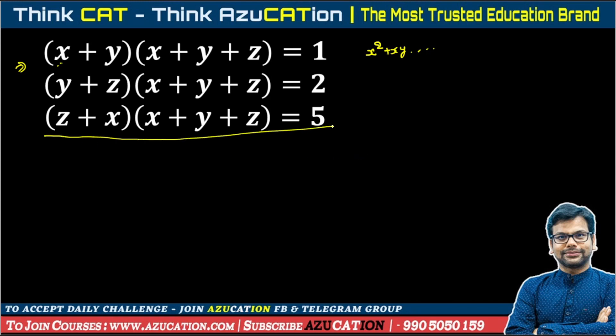So let's add all three terms: equation number 1, equation number 2, equation number 3. When we add, we know that x plus y plus z is common. So x plus y plus z taken common from all three equations. From equation 1 we have x plus y, from equation 2 we have y plus z, from equation 3 we have z plus x. On the right hand side, 1 plus 2 plus 5 is 8.